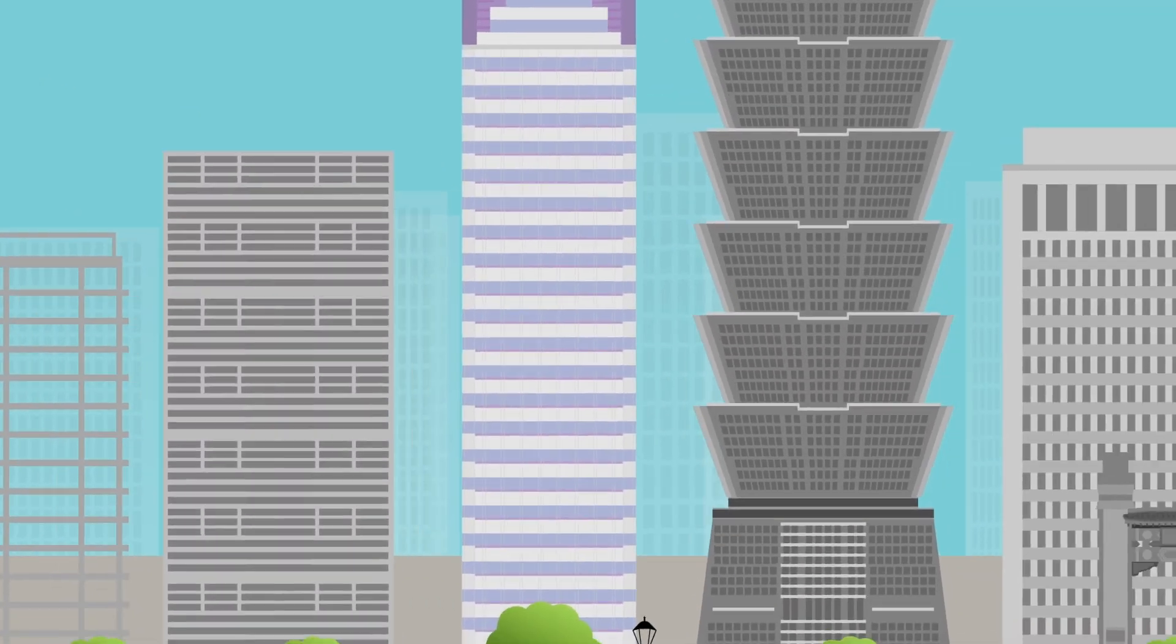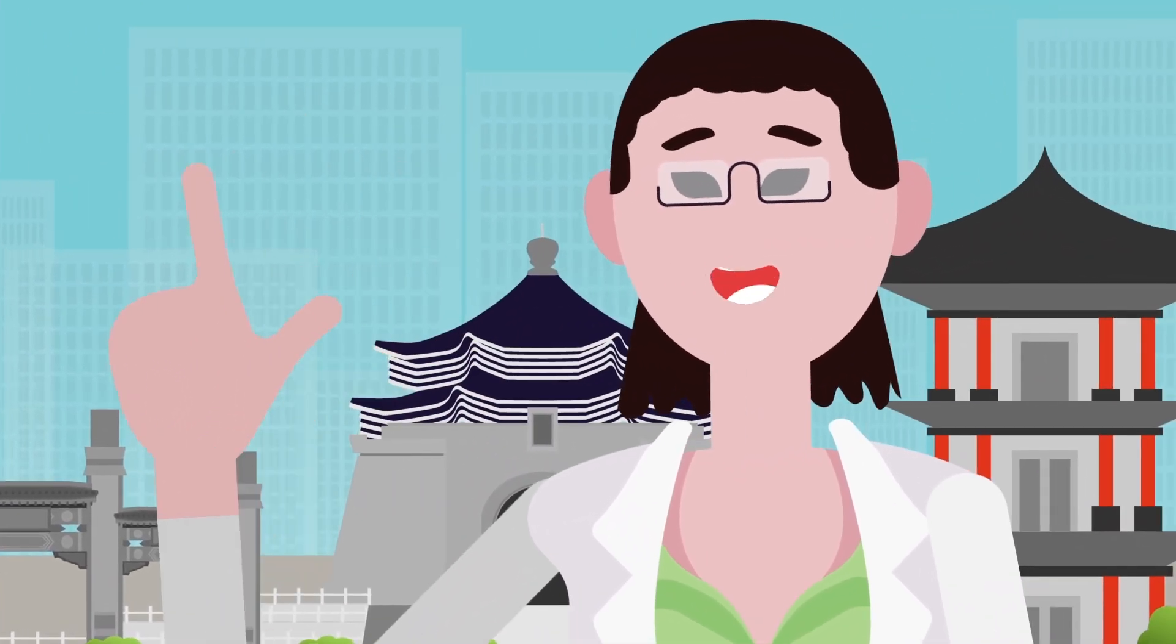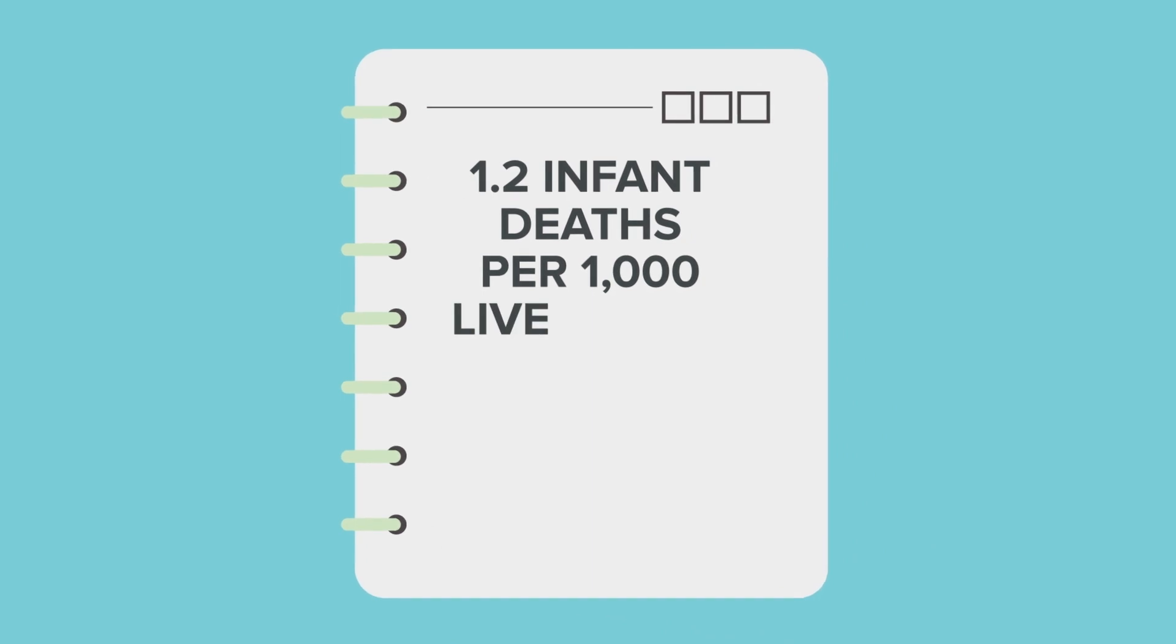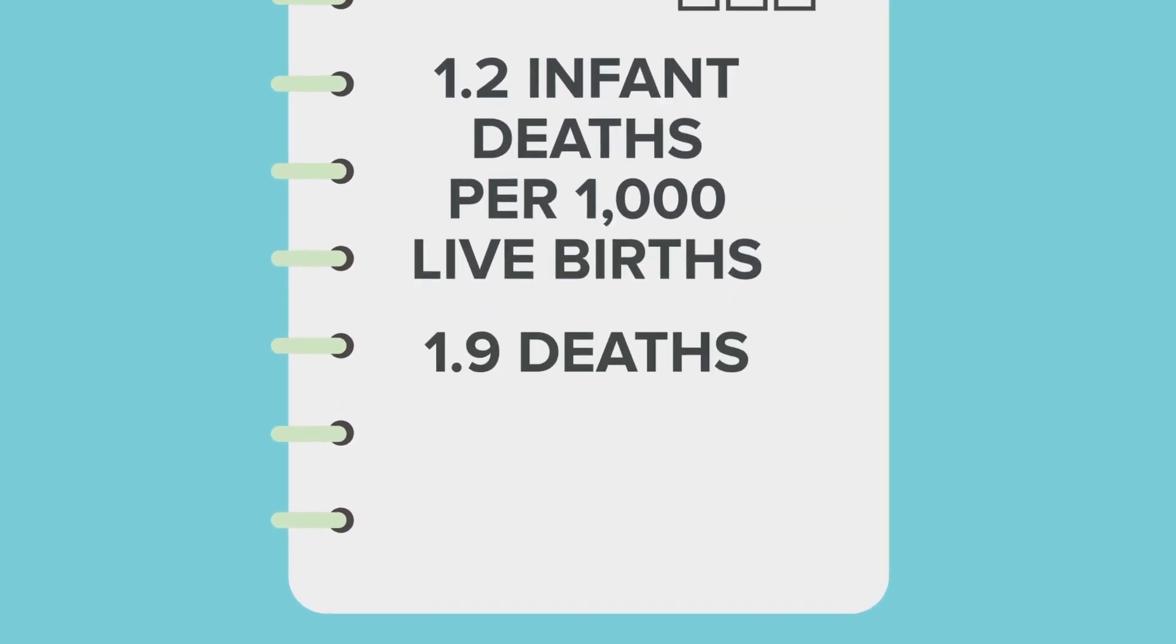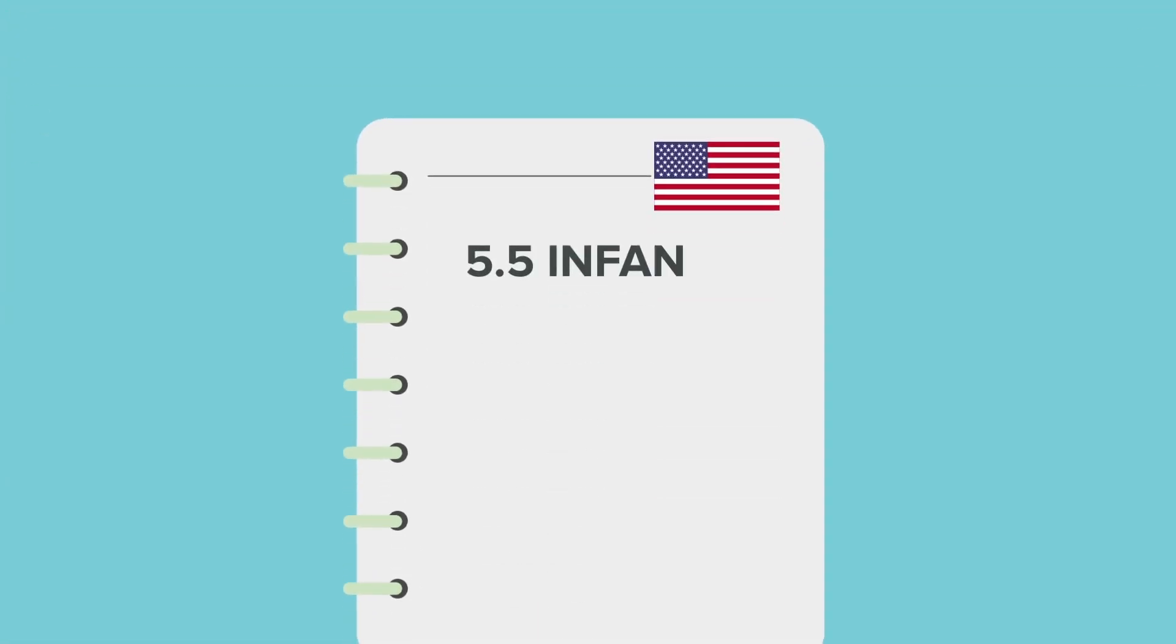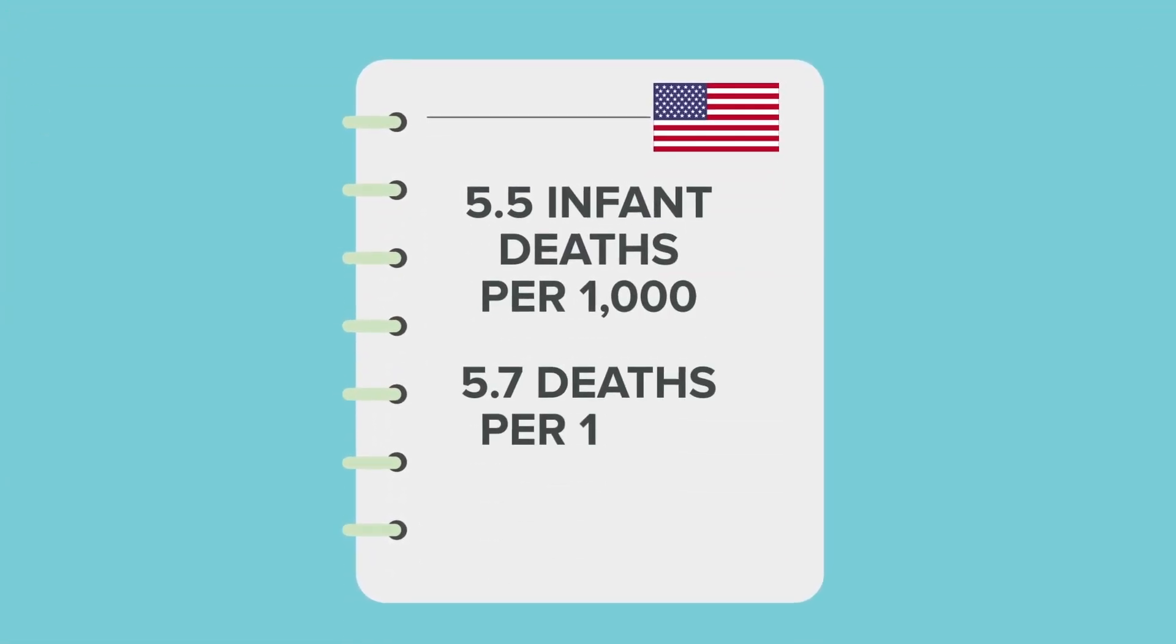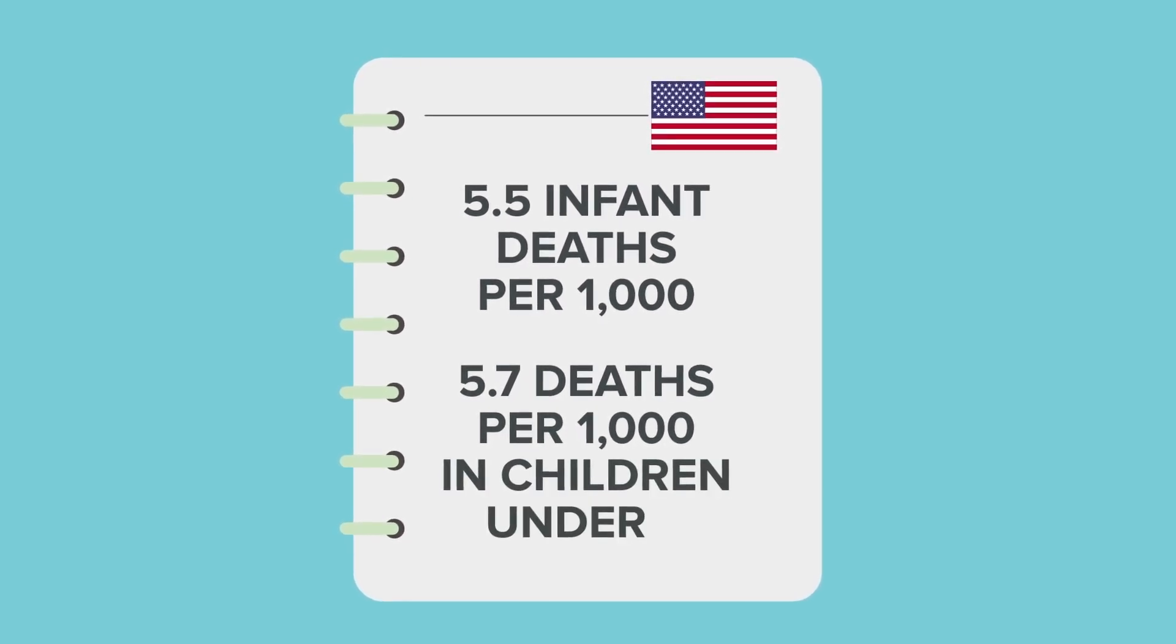Hong Kong, which currently boasts the highest life expectancy in the world, also has some of the lowest infant and child mortality rates, with just 1.2 infant deaths per 1000 live births, and only 1.9 deaths per 1000 children under 5. In the US, these numbers are a bit higher, at 5.5 infant deaths per 1000, and 5.7 deaths per 1000 in children under 5.